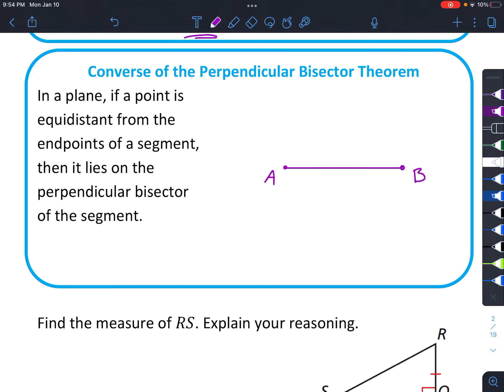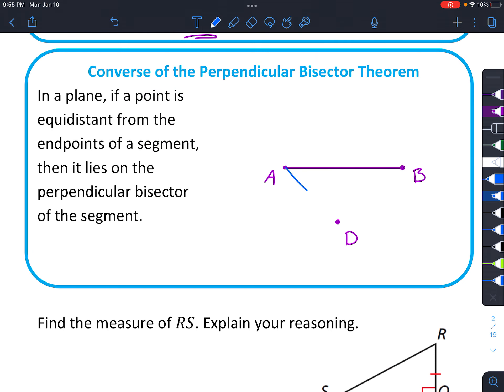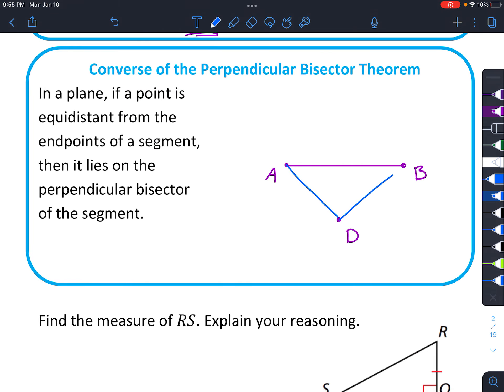And it says we have a point that's equal distance from the endpoints. And I might actually put it down here this time. We'll call this point D. And it says it's equal distance, so from here and then from D to B, these distances are the same. Okay, that's what we're given.